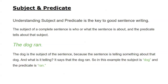Let's talk about subject and predicate. You need to know the difference between those — understanding subject and predicate is the key to good sentence writing. The subject of a complete sentence is who or what the sentence is about, and the predicate tells about that subject. For example: 'The dog ran' — the dog is the subject and ran is the predicate.